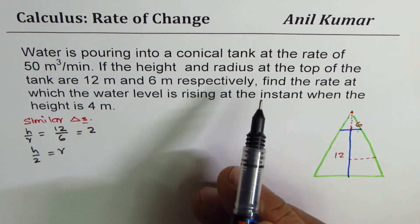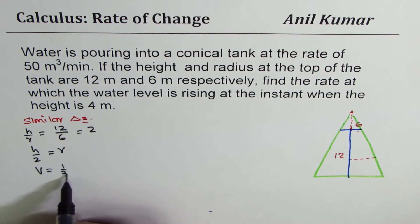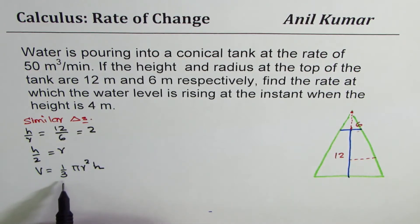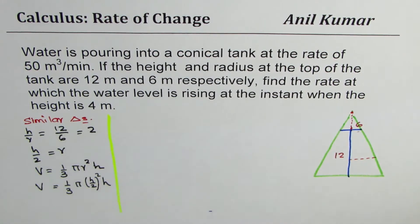Now, we need to also know the formula for volume of conical flask. Volume for conical flask is 1 by 3 pi r square h. It is 1 third volume of a cylinder. Pi r square h is volume of a cylinder. Now, since we know r is half of height, we can replace r with h over 2. So we can write the formula in terms of h. So we get pi, instead of r, we will write h over 2 whole square times h.